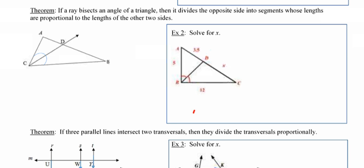So in other words, in this picture, because ray CD bisects this angle, we know that if we compare the length of AD to its adjacent side in the triangle, that's going to be equal to the ratio where we compare the length of DB to the length of CB.